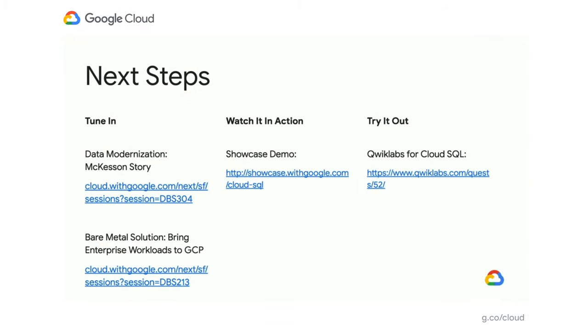I encourage you to tune in to two additional sessions: first, data modernization with McKesson's story of their migration to Cloud, and then our bare-metal solution, which helps bring enterprise workloads to GCP. Follow the link to try our whack-a-mole-style high availability demo. And try it out for yourself — get hands-on with Cloud SQL by following our Quick Lab quest, where you'll be introduced to Cloud SQL's capabilities including those mentioned today. Thank you for joining me, and I'm available for expert sessions as part of Google Cloud Next 2020.